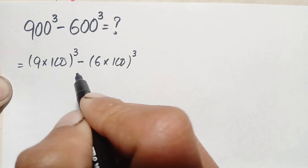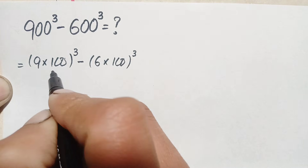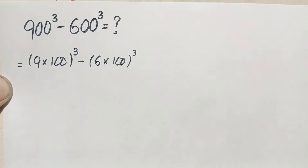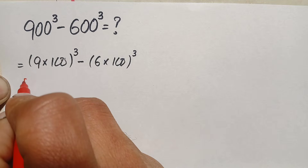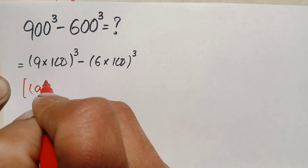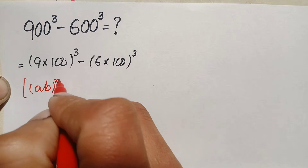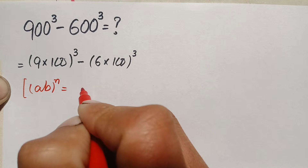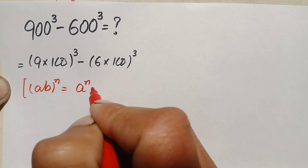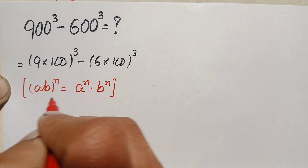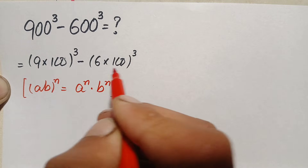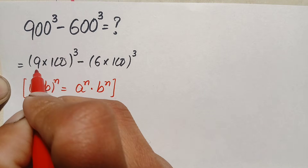Now in these two terms we will use the exponential identity: a times b, whole raised to power n, can also be written as a raised to power n times b raised to power n. We will apply this identity to both terms.